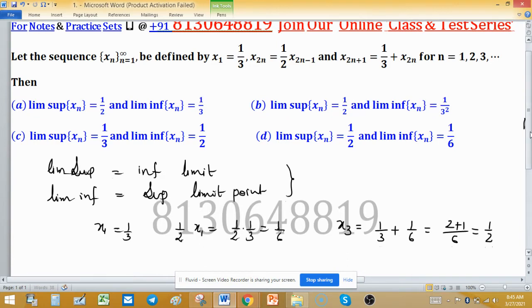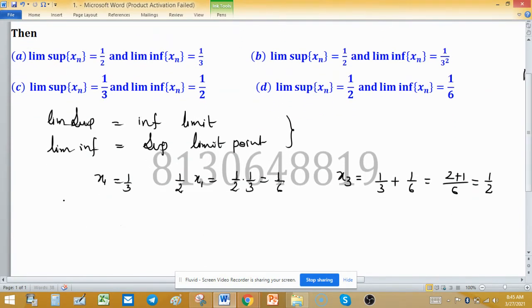Few terms of the sequence are: 1 upon 3, this is first term, second term is 1 upon 6, and third term is 1 upon 2. So, you can compute other terms as x4. x4 will be 1 upon 2 into 1 upon 2, this is equal to 1 upon 4, and x5 is 1 upon 3 plus 1 upon 4.